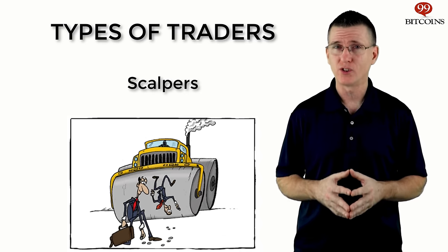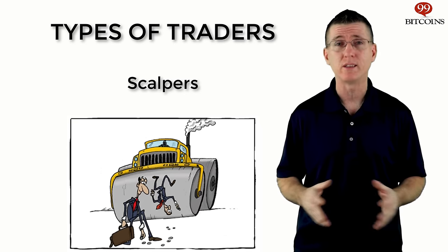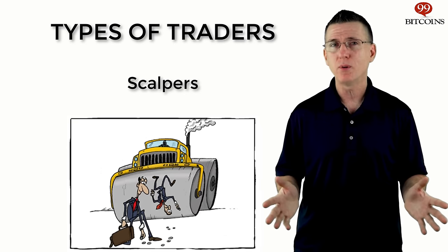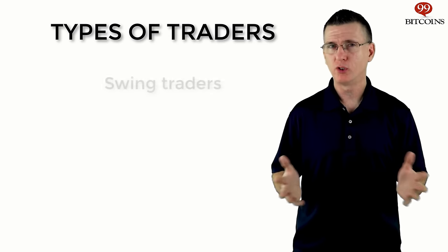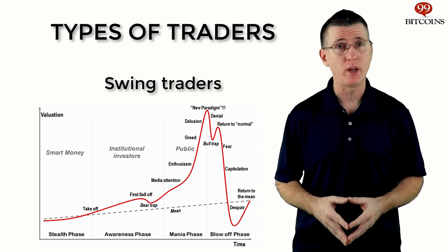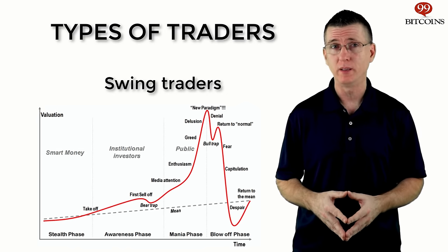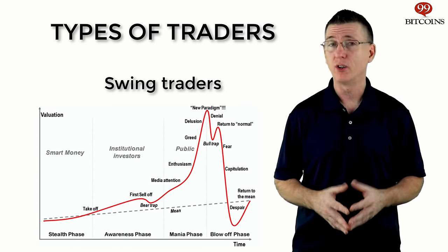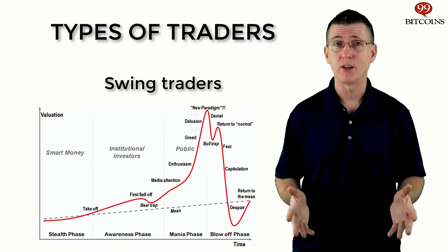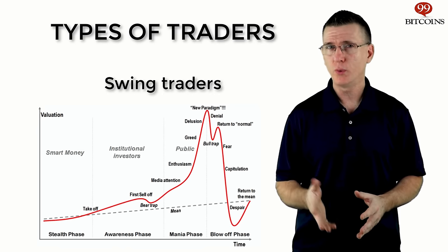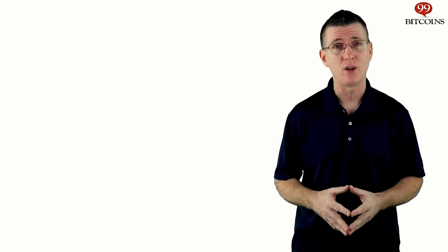Scalping focuses on extremely short-term trading, and it's based on the idea that making small profits repeatedly limits risks and creates advantages for traders. Scalpers can make dozens or even hundreds of trades in one day. Meanwhile, swing trading tries to take advantage of the natural swing of price cycles. Swing traders try to spot the beginning of a specific price movement, enter the trade, then hold on until the movement dies out and take the profit. They can hold a trading position open for weeks or months until they reach the desired result.